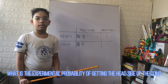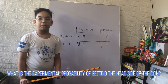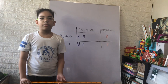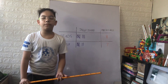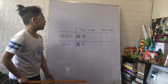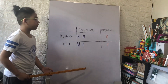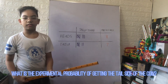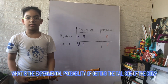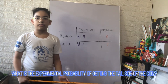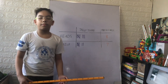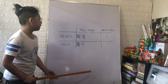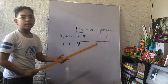What is the experimental probability of getting the head side of the coin? The experimental probability of getting the head side of the coin is 8 out of 15. And the experimental probability of getting the tail side of the coin is 7 out of 15.